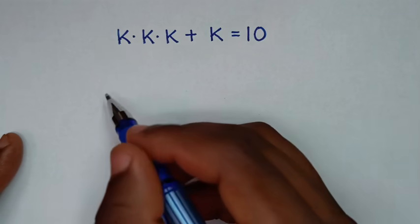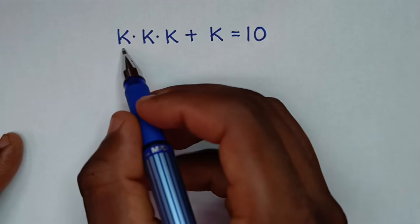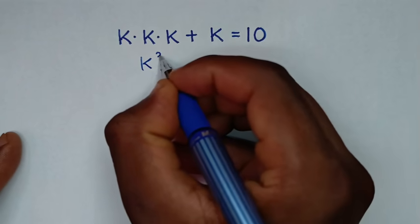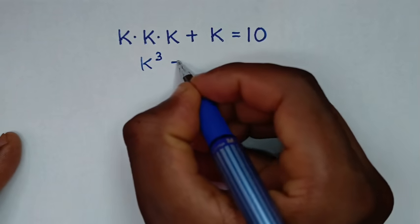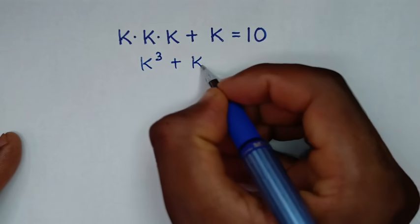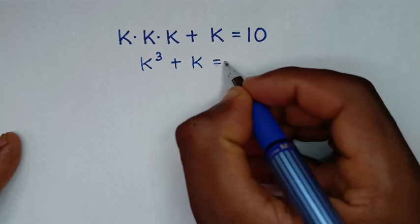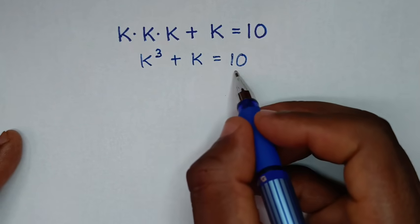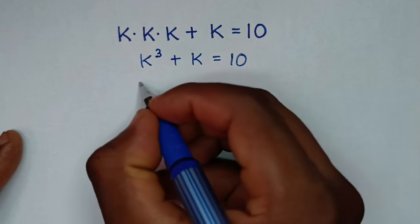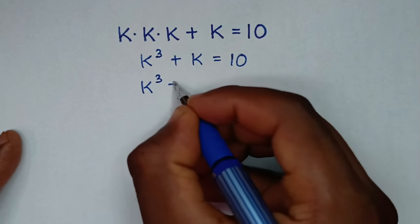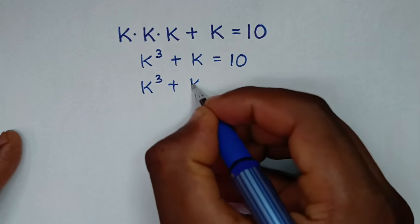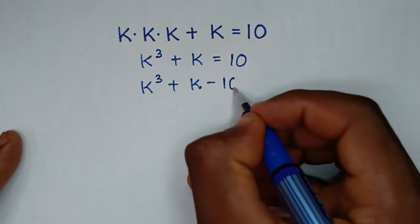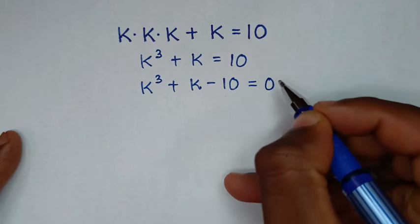From our problem, k times k times k is k to the power of 3, then plus k is equal to 10. We will take 10 to the left side, so it will be k power of 3 plus k minus 10 is equal to 0.